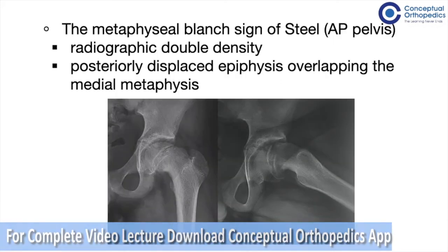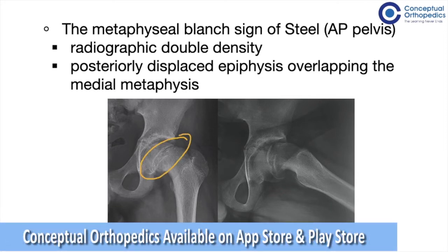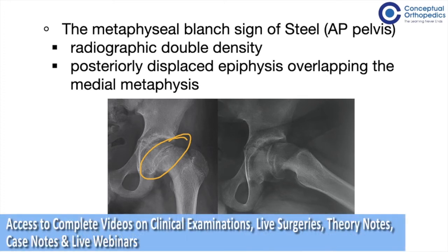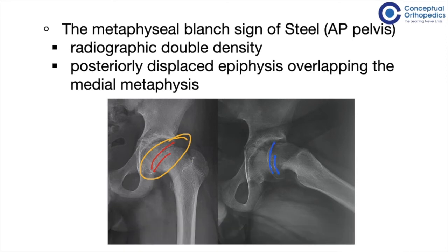Next we have the metaphyseal blanch sign of Steel, which is a radiographic double density seen around the physis because of the posteriorly displaced epiphysis which overlaps the medial metaphysis. We see two lines forming the physis in this condition, visible on both the AP and lateral views.